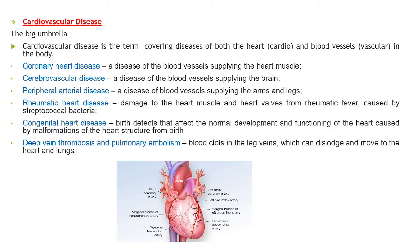Rheumatic heart disease can damage heart muscle and valves due to bacteria. Congenital heart diseases are birth defects affecting the heart. Finally, deep vein thrombosis and pulmonary embolism involve blood clots that move to the heart and lungs and can affect these organs.